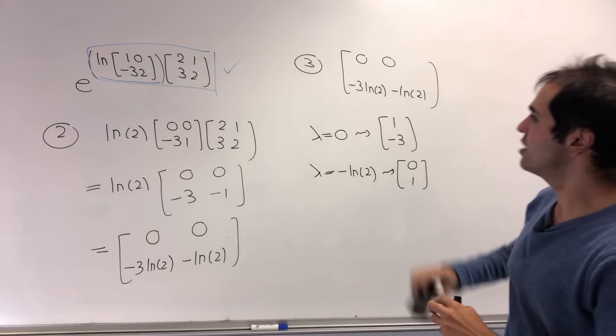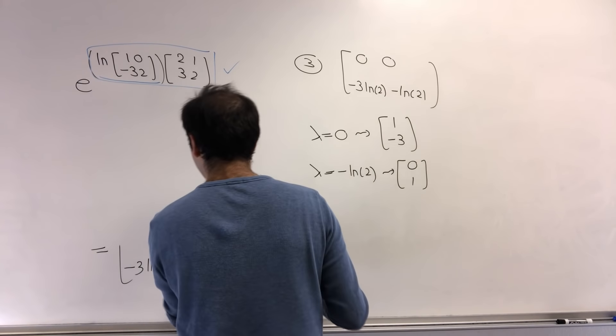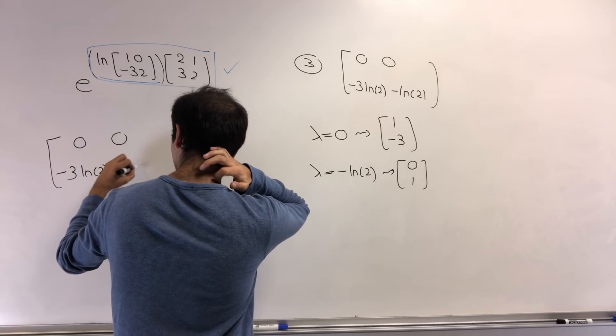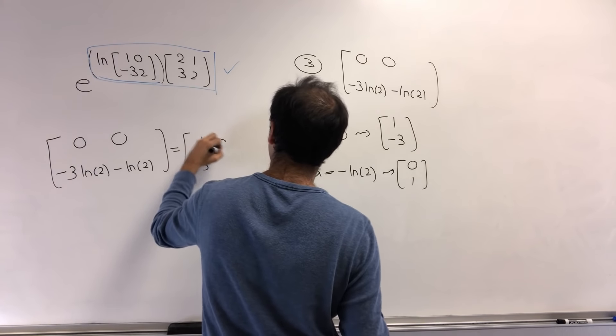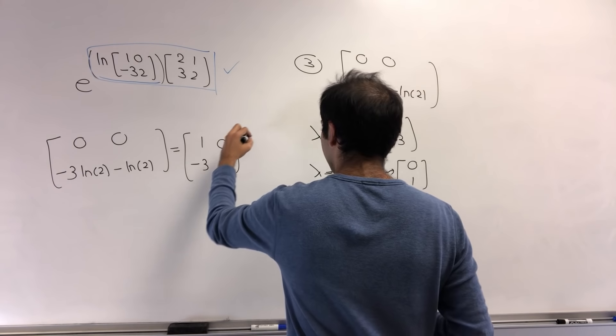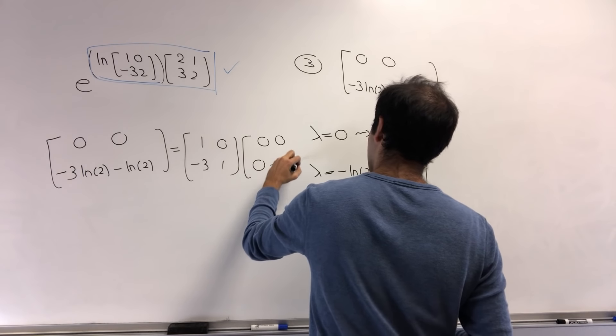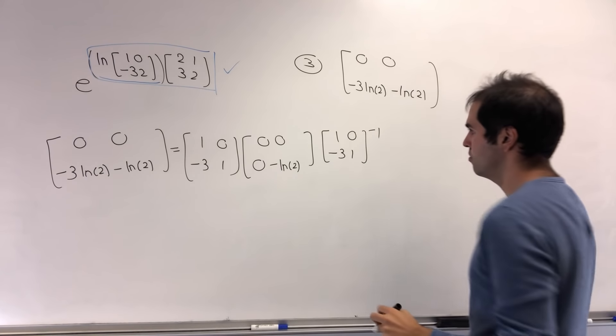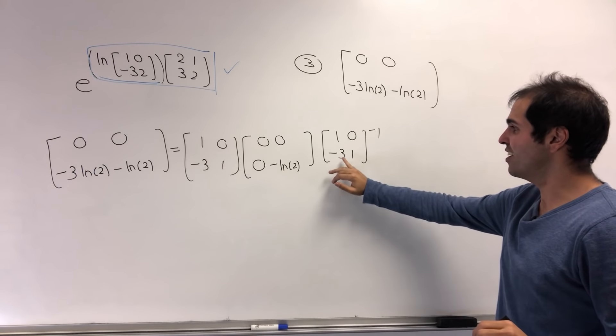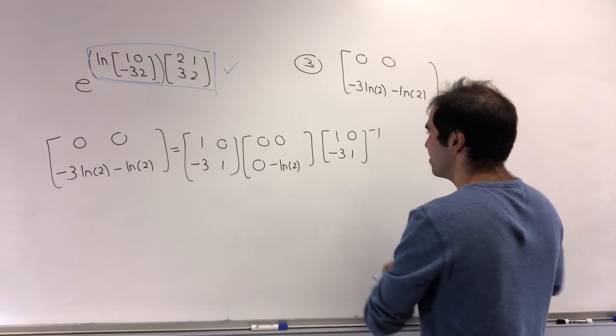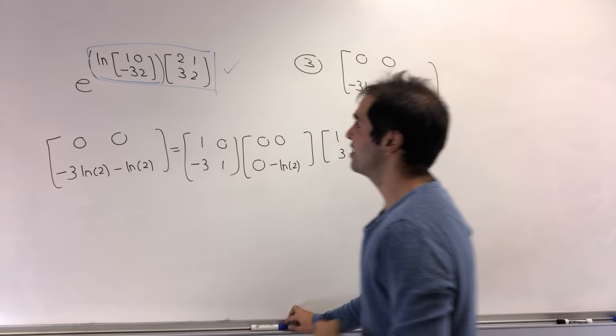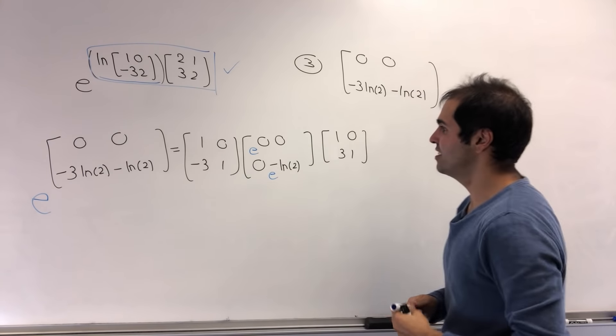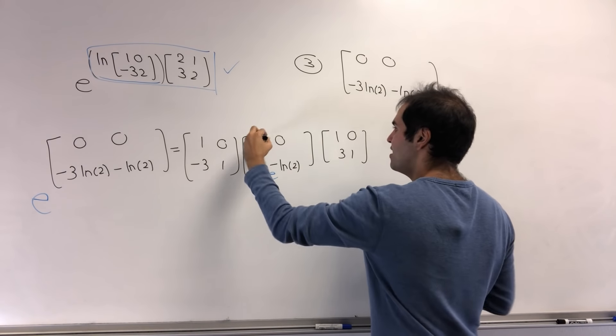Okay, so what does that tell you about this matrix? So it tells you 0, 0, minus 3 ln of 2, and minus ln of 2, that is 1 minus 3, 0, 1. So eigenvectors times 0, 0, 0, minus ln of 2, and the matrix inverse, so 1, 0, minus 3, 1 inverse. And again, the inverse here is also easy to calculate. The opposite of subtracting three times is adding three times, so 1, 0, 3, 1. And last but not least, remember our goal is to exponentiate. So to exponentiate this, you exponentiate the diagonal entries, but e to the 0, that is 1, and e of minus ln of 2, that's 1 half.